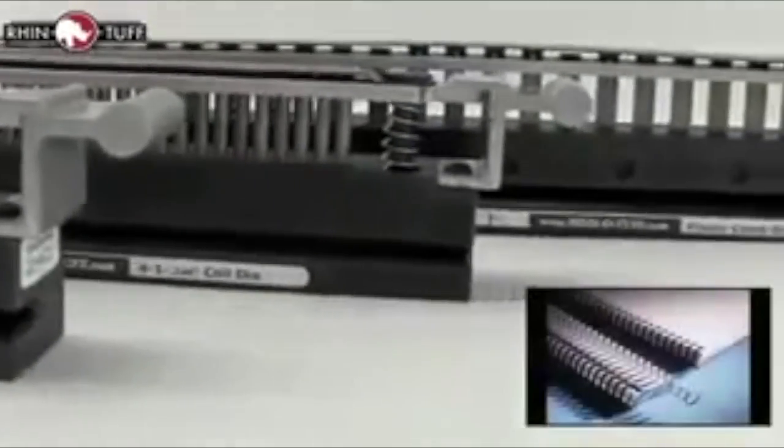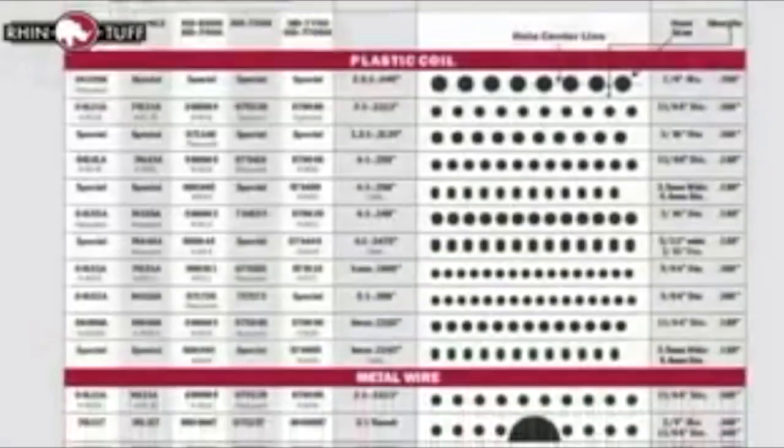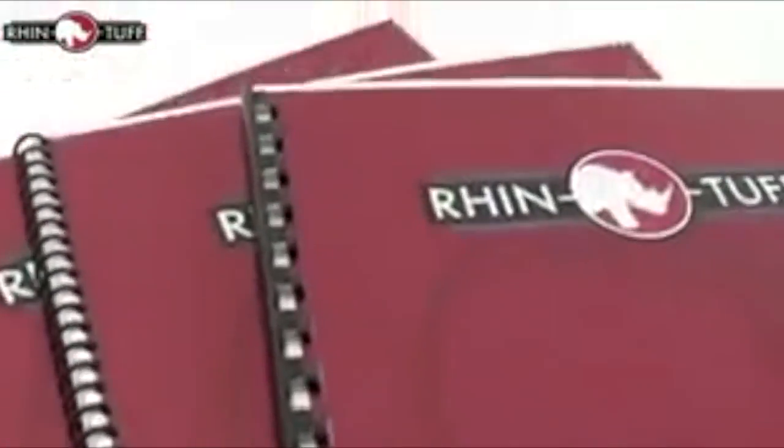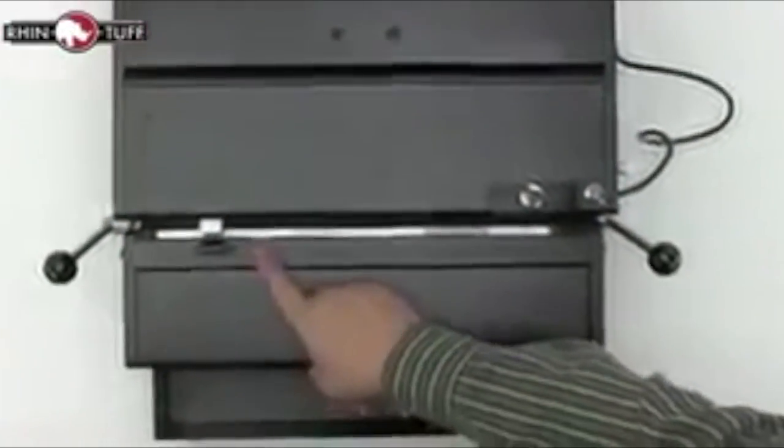comb, wire loop, plastic coils, bellowbine, three-hole loose leaf, your needs will be met by this machine. This kind of on-the-spot flexibility is outstanding for a machine of this caliber.